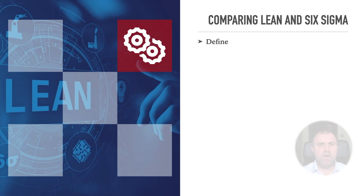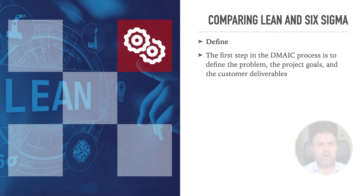Define. The first step in the DMAIC process is to define the problem, the project goals, and the customer deliverables.